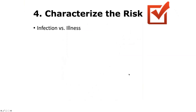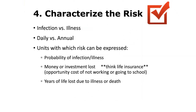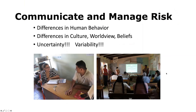The fourth step is to characterize the risk — determining whether exposure results in asymptomatic infection or illness, whether the risk is assessed daily or annually, and which units are used to express and communicate risk to stakeholders involved in managing microbial risks. The final steps involve communicating and managing risks, addressing uncertainty and variability associated with the risk assessment.